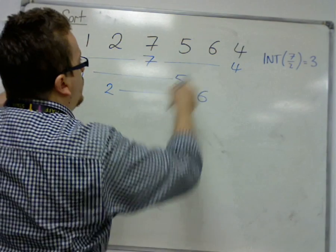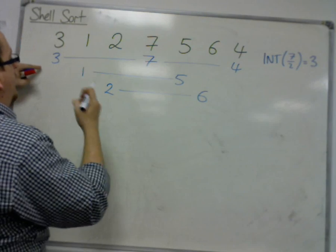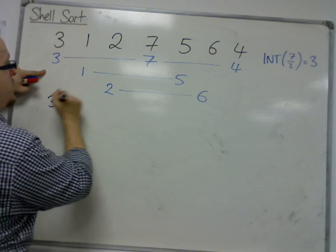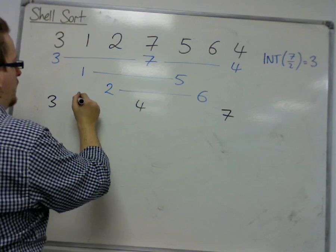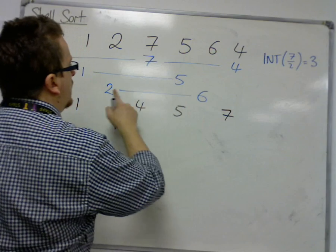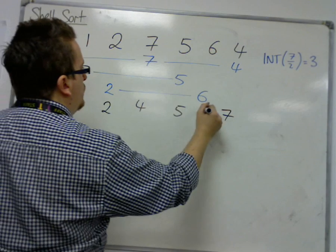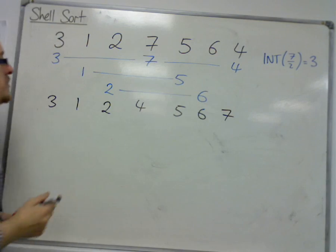So the 3, 7, and 4, that would be shuttle sorted, so we would get 3, 4, and 7. We would have 1 and 5, 1, 5, and then 2 and 6, so no swaps need to be made on either of those two comparisons.